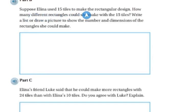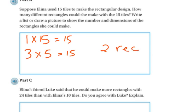Suppose Elena used 15 tiles to make the rectangular design. How many different rectangles could she make with 15 tiles? Write a list and draw a picture to show the number of dimensions of the rectangles she could make. Well, we know that 1 times 15 is 15, and 3 times 5 is 15. So she could make two rectangles without having any leftover.